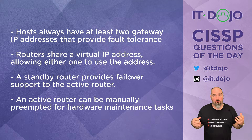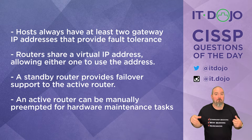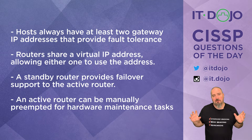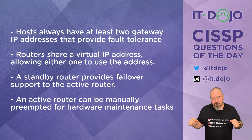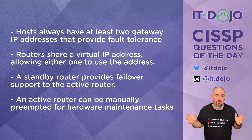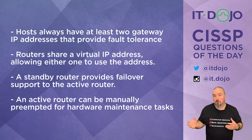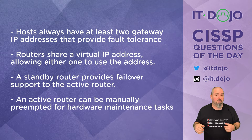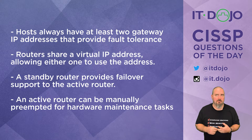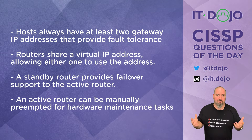If you needed to take the active router offline, you could manually go in and preempt the active and have the current standby become the new active, take the other router offline, do whatever you need to do, and then stand it back up. It doesn't just have to be two routers — it can be more. FHRP is actually a concept, not a protocol. The actual protocols out there include HSRP (Hot Standby Routing Protocol), VRRP (Virtual Redundant Router Protocol), and GLBP (Gateway Load Balancing Protocol).